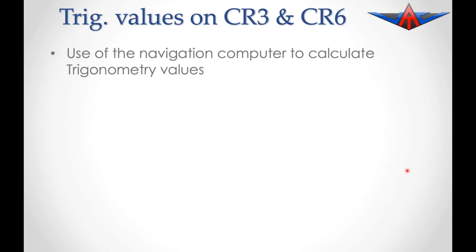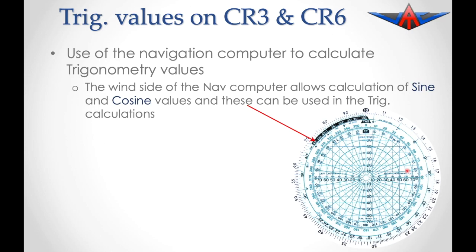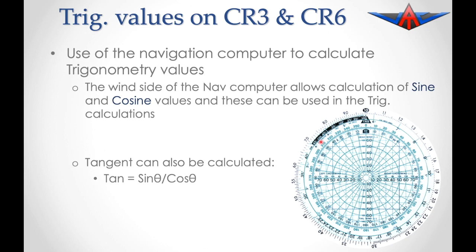We can use the navigation computer to calculate these trig values. The wind side of the navigation computer allows us to do calculations of both sine and cosine — sine is labeled in the white section and cosine values are in the black section. You could also calculate tangent values by getting the sine value and the cosine value and doing a division between the two.